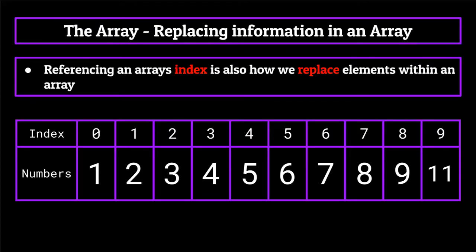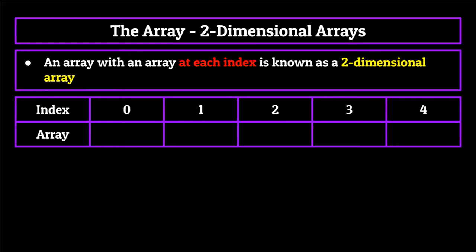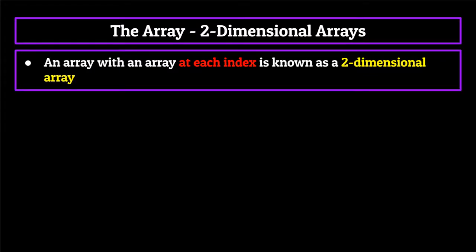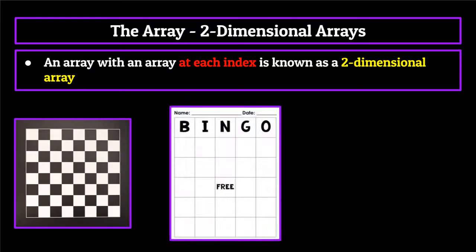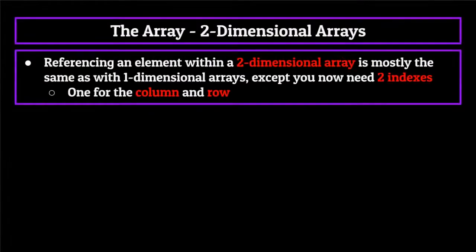The last thing I want to talk about before jumping into time complexity equations for an array is the practice of putting arrays inside of arrays. An array with an array at each element is known as a two-dimensional array — think of it as a matrix. Instead of a primitive data type like an integer housed at each element, we would instead have a whole other array with its own size and indexes. Two-dimensional arrays are useful for a variety of purposes, such as programming a chess board, a bingo board, or even an image where each element contains an RGB value. Referencing an element within a two-dimensional array requires two indexes — the first number is the index of the column, and the second is the index of the row.